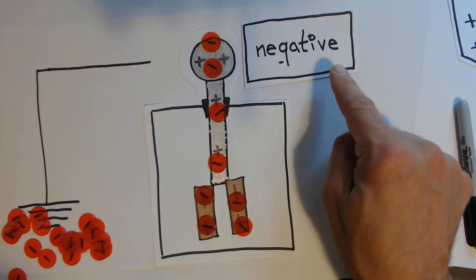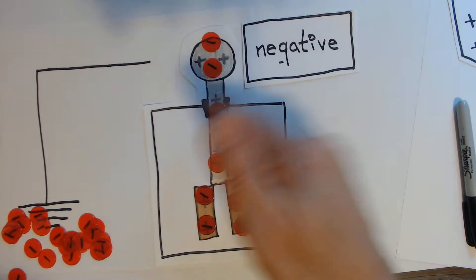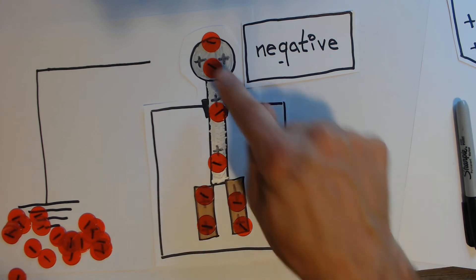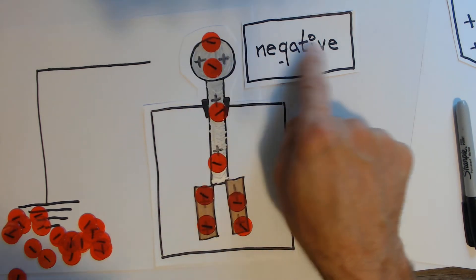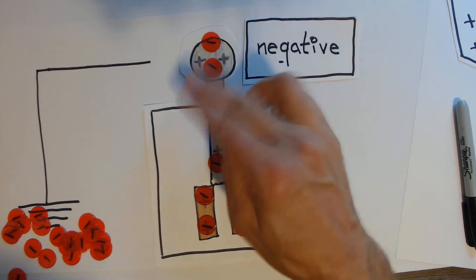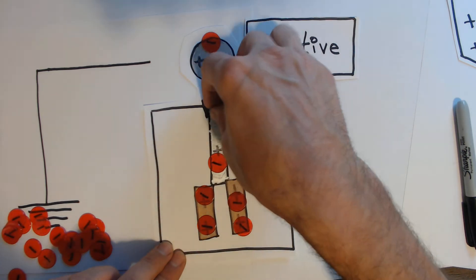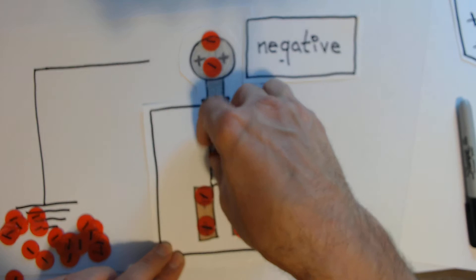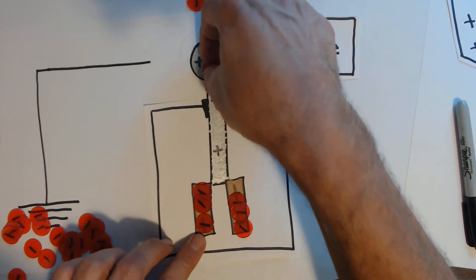But I don't touch it, it doesn't matter if I bring it to the top or side, whatever. Now these negatives are going to be repelled by the negative charge because like charges repel. So these negatives are all going to go to the bottom to get as far away as possible, run away from the negatively charged object.